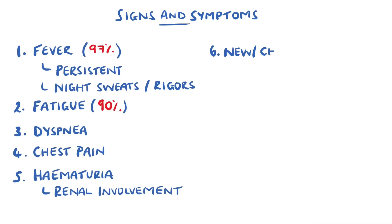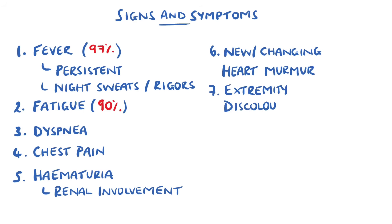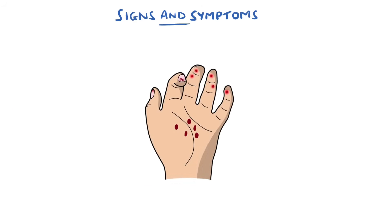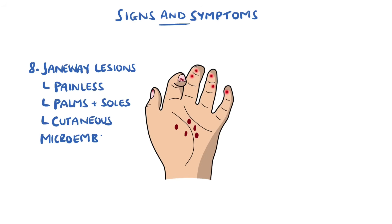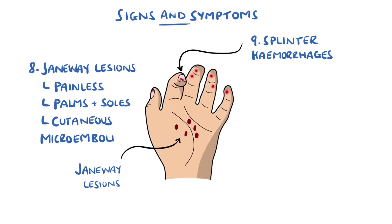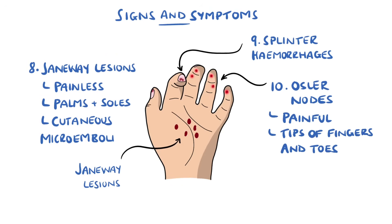On physical exam, there may be a new or changing heart murmur, and there may be blackening of the extremities if emboli have reduced the blood flow. Janeway lesions are painless cutaneous lesions on the palms of the hands and soles of the feet, and are the result of microemboli. Splinter hemorrhages can be seen in the nail beds due to capillary injury. Often confused with Janeway lesions are Osler nodes, which are painful erythematous nodules, typically on the tips of the fingers and toes, thought to be due to a local immunological response.